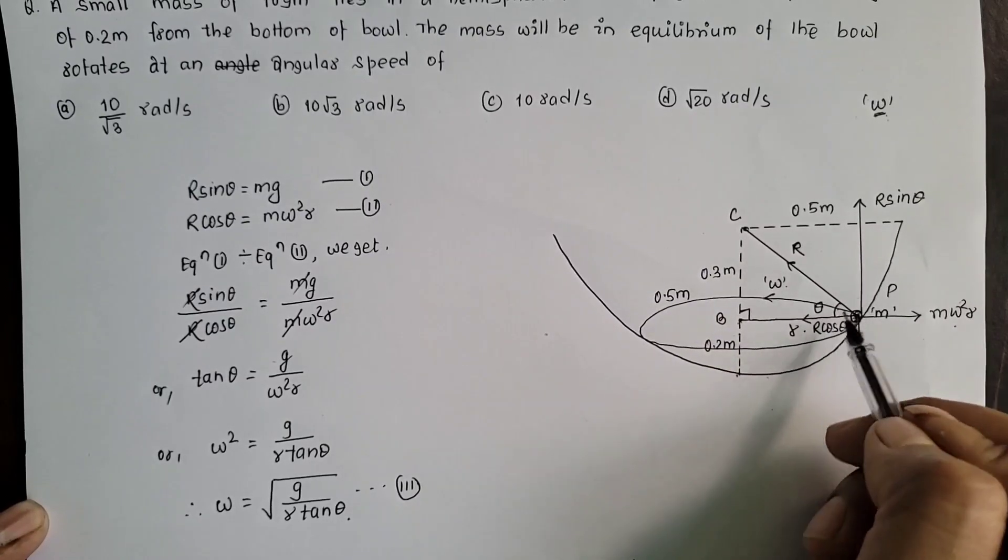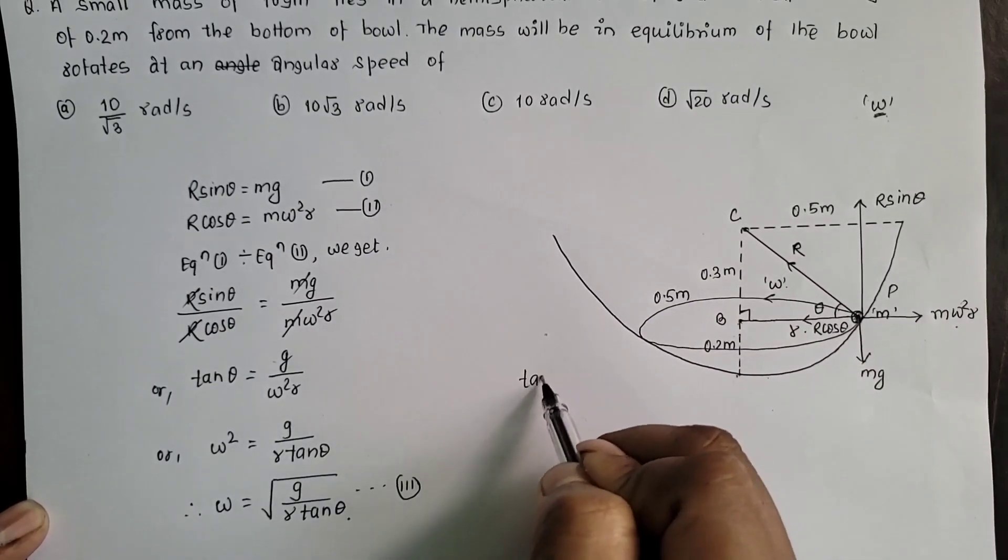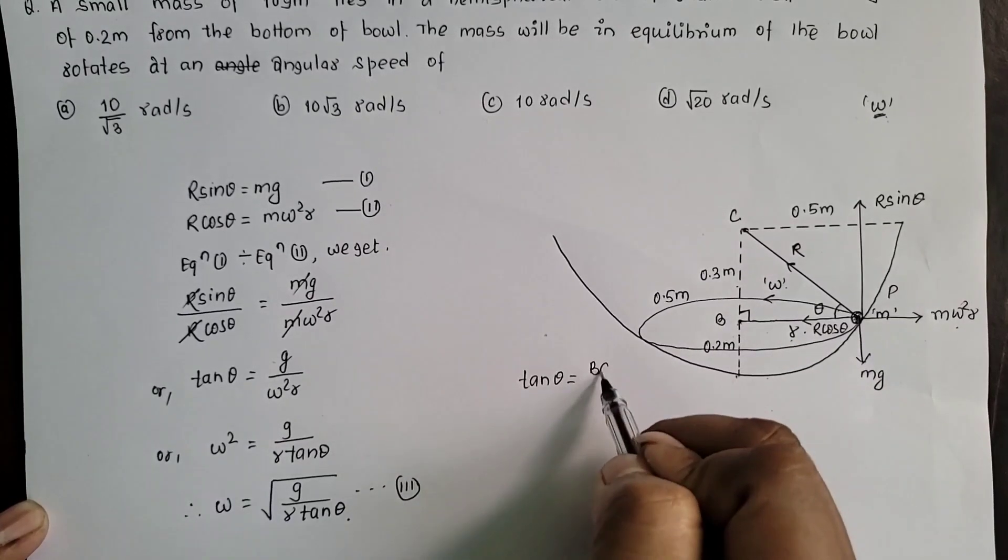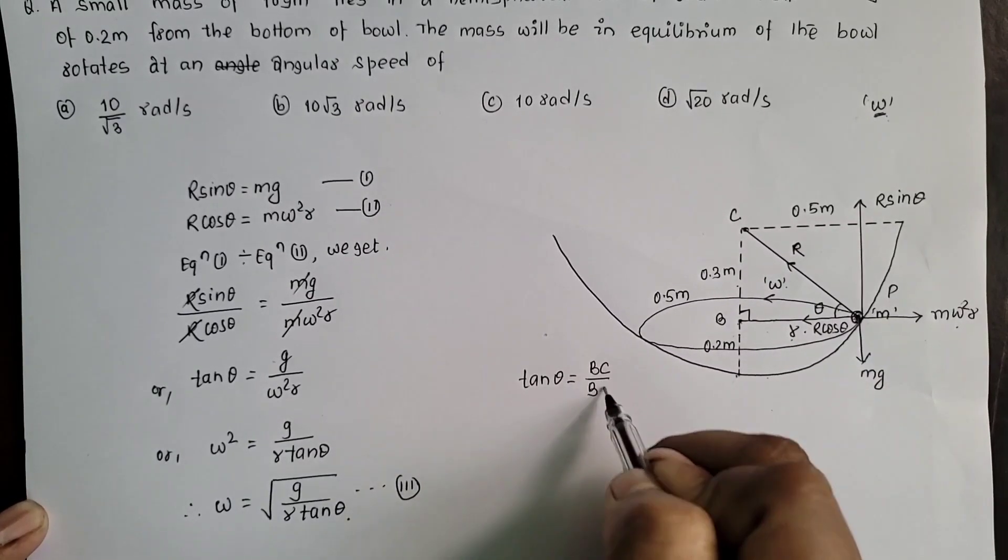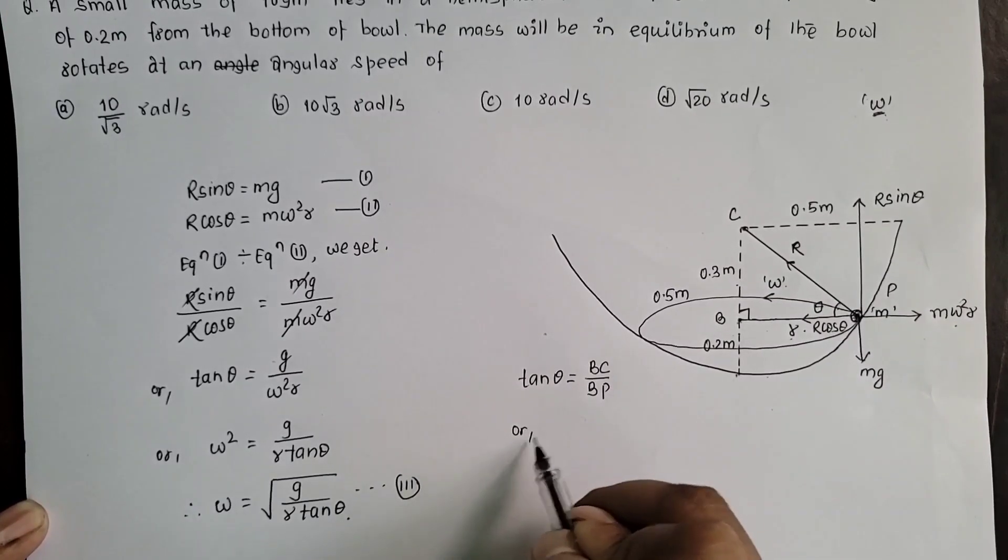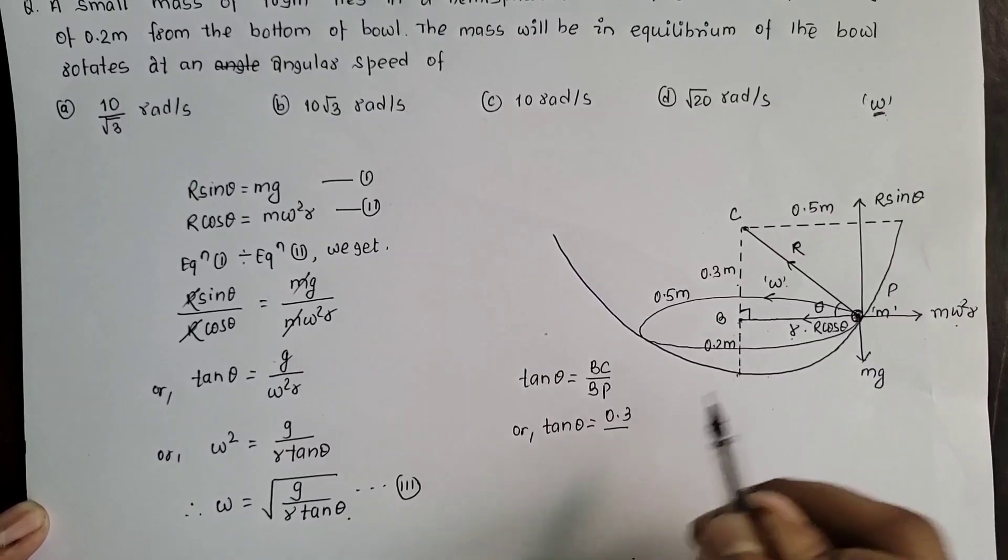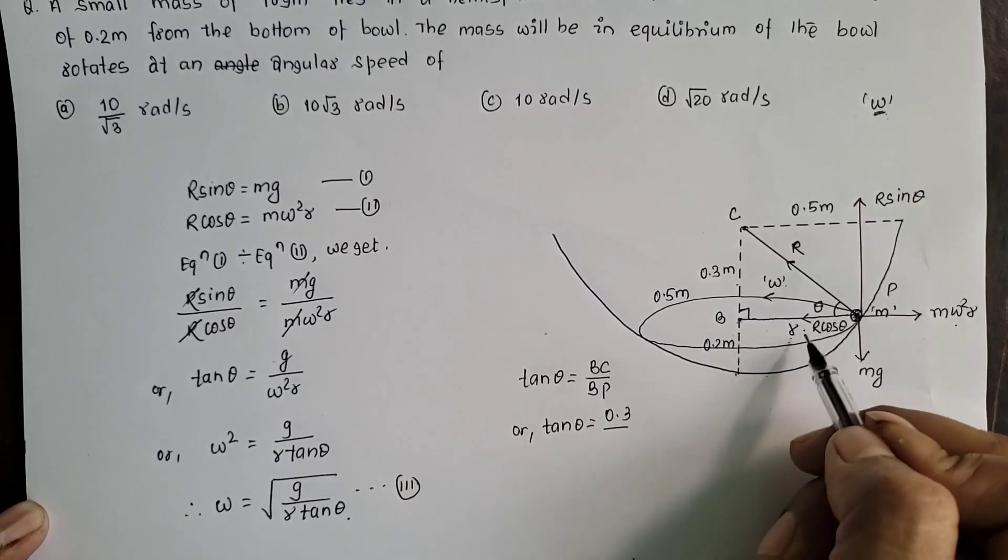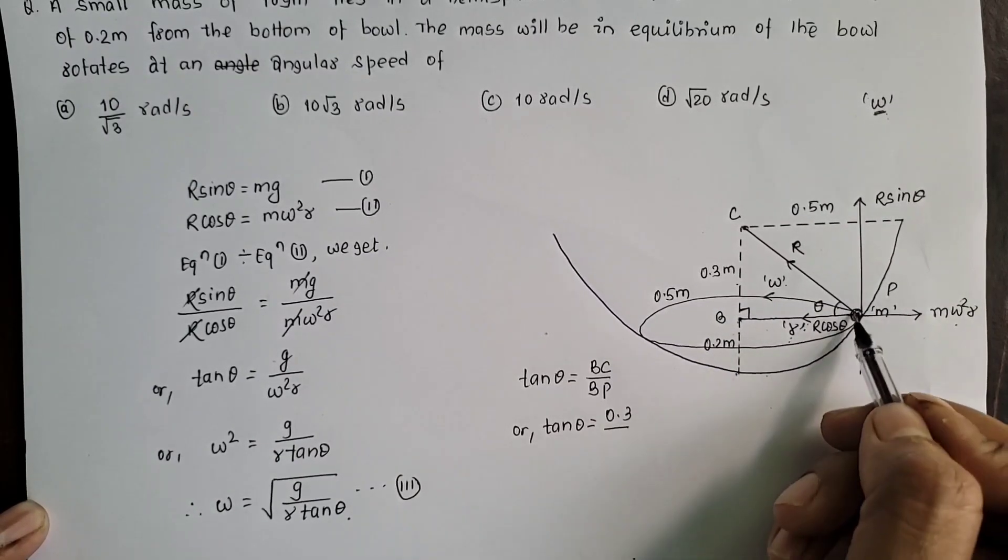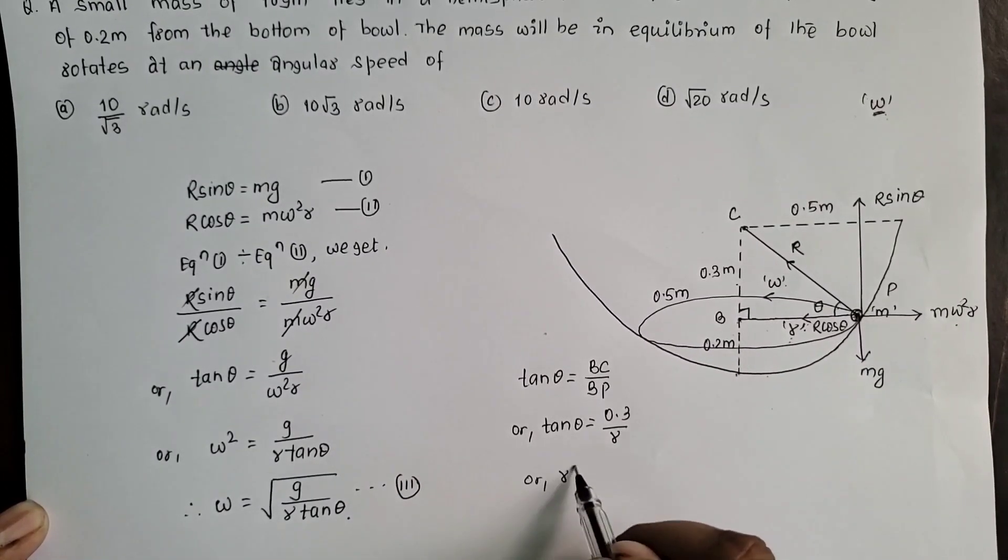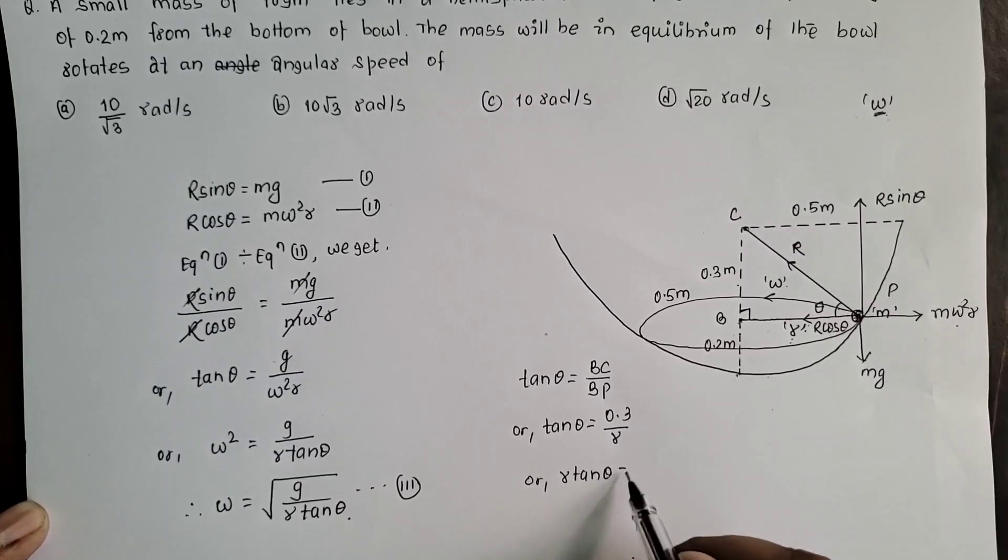CBP ma tan theta equal to gharaya x. PY by BP, BC by BP. Tan theta equal to BC ko value x 0.3 and BP ko value x r, radius of the given mass r. S vada R tan theta equal to generation 0.3.